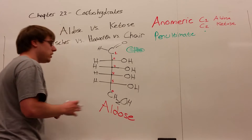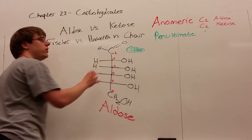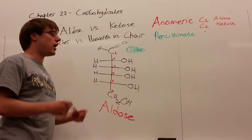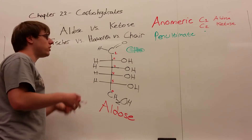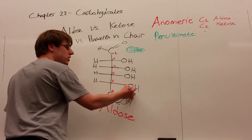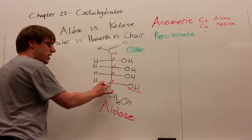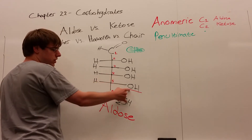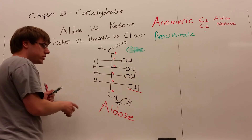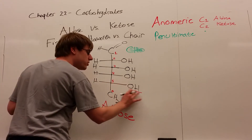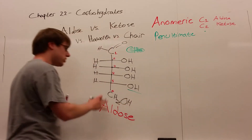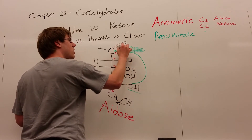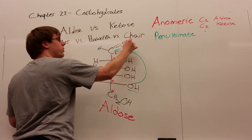What happens to form the ring is that carbon 1 in an aldose is what we call the anomeric carbon. The anomeric carbon is the carbon with the double-bond oxygen on it, and it will be attacked by something. What forms the ring — what attacks that carbonyl carbon — is the oxygen of the OH group on the second-to-last carbon. We refer to this OH as the penultimate OH on the penultimate carbon, and this OH will use its electrons to attack carbon 1, causing the double-bond oxygen to swing up.